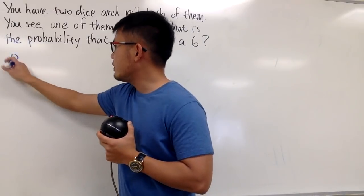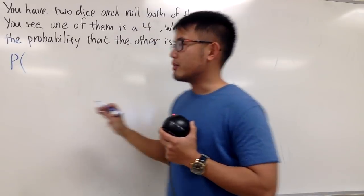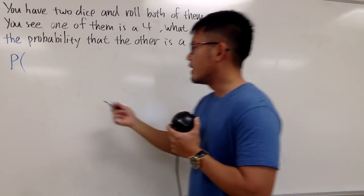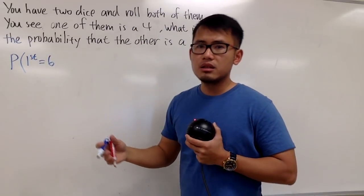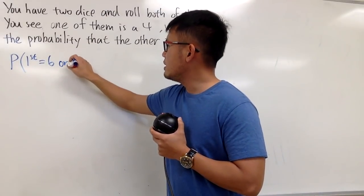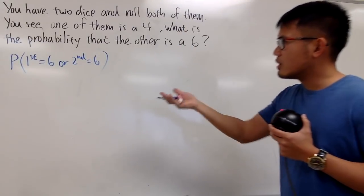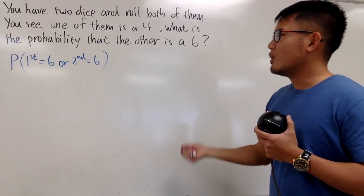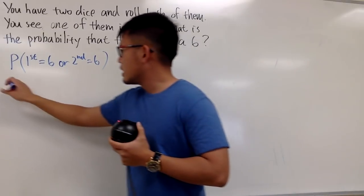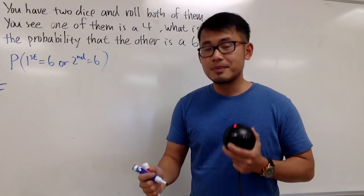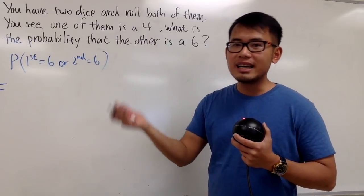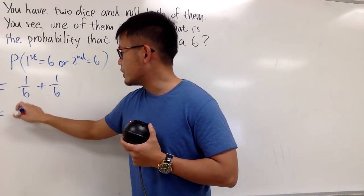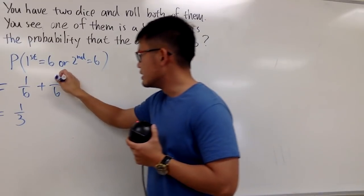Let me write down P for probability, and I'll open parentheses and describe what we're trying to do. Maybe we're just trying to find out the probability that the first one is a 6, or the second one could be a 6 as well. What's the probability that when you roll a die you get a 6? A die has 6 sides, and 6 is just one of them, so it's 1 over 6. We can do the same thing for the second one and add them up. 1 over 6 plus 1 over 6, we get 1 third.